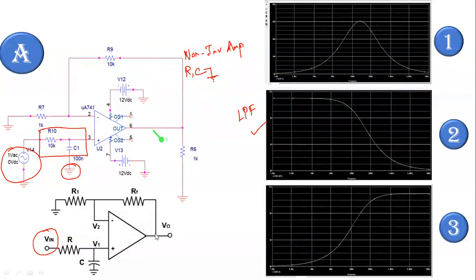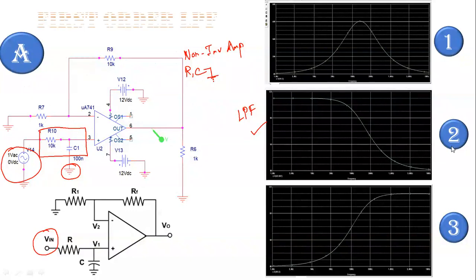We have taken the circuit without a load resistor. V2 is connected to ground through resistor R1, and RF is the feedback resistor between the output and the inverting terminal. At the non-inverting terminal, we are giving the actual input — a sinusoidal waveform — through the RC combination. This is called the low pass filter. The response of this particular circuit is shown as the middle waveform, number two. We can call it a first order low pass filter.